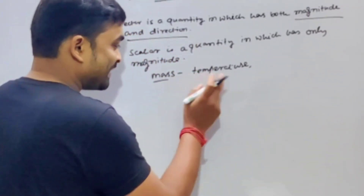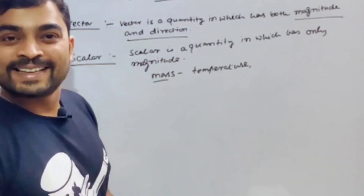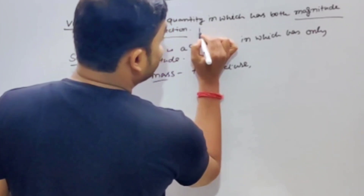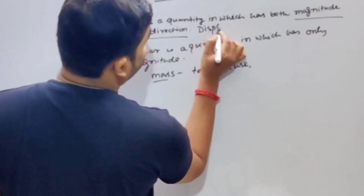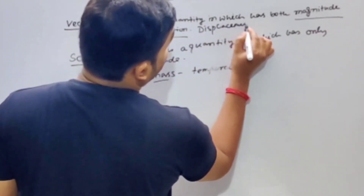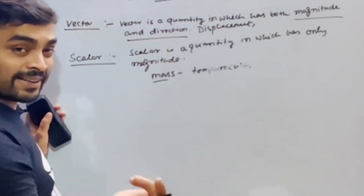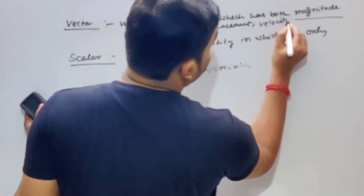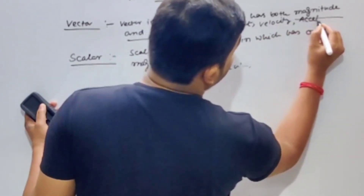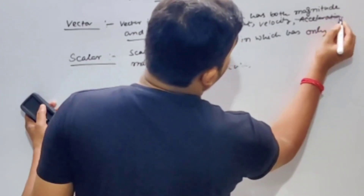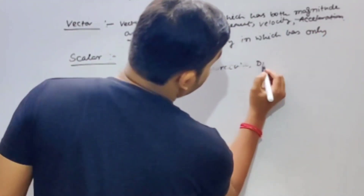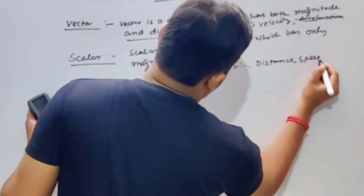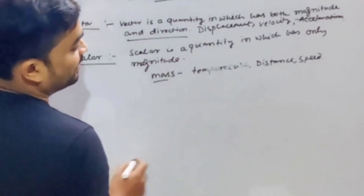Scalar quantity examples: mass, temperature, distance, speed. Vector quantity examples: displacement, velocity, acceleration, and so on.